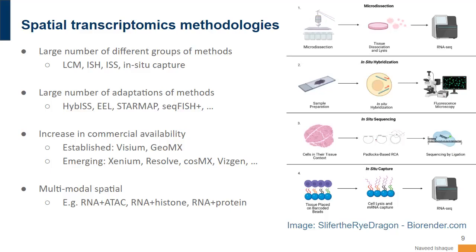One important consideration for training purposes is at what point these technologies become commercially available. With sequencing, it was the change from homebrew sequencing to an Illumina sequencer — which meant for very little money and in a robust way, being able to get results — that allowed people to generate data at mass. This is the point where training actually becomes very effective and efficient. We're beginning to see this now, with technologies such as Visium and GeoMx that have been out for a while.